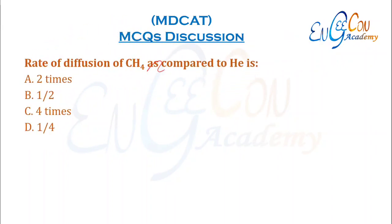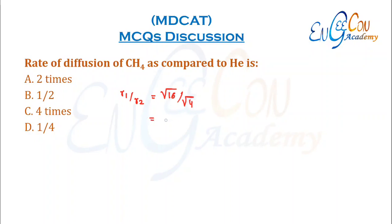Rate of diffusion of CH4 compared to helium: the molar mass of CH4 is 16 and helium is 4. The ratio gives 2. So the rate of diffusion of helium is 2 times that of CH4, and CH4 diffuses at half the rate of helium.